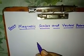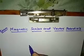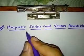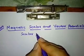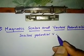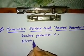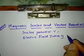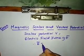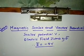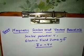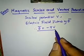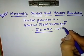In the last class we dealt with the applications of flux density and flux to coaxial cable. Next we'll see magnetic scalar and vector potentials. In electrostatics we have come across scalar potential V, which is related to electric field intensity E-bar. This is given by E-bar equals minus del V — that is, electric field intensity is the negative gradient of the scalar potential.